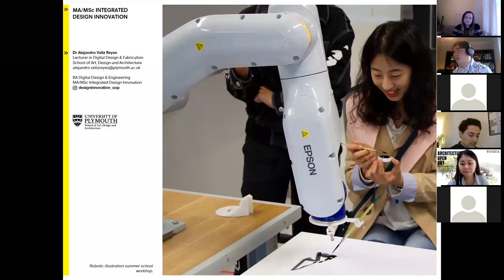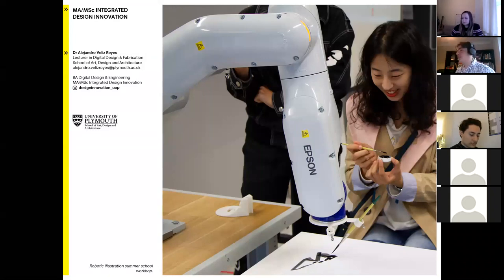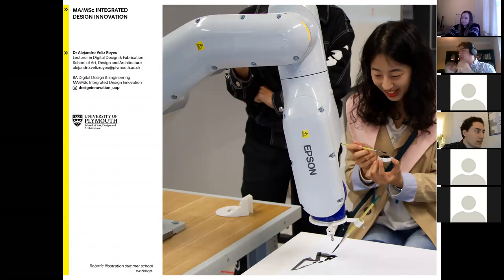We also feed this course with our own research. I do research on creative robotics — how we can use digital technologies such as robotics and printing for creative applications. What you're seeing on screen now is a workshop we did last year with partner universities from China around robotic art and collaborating with machines. Students designed tools attached to the robot and then collaboratively drew and painted using computer vision applications.